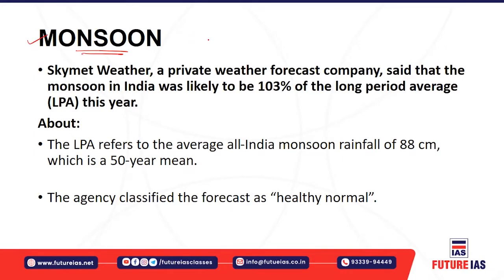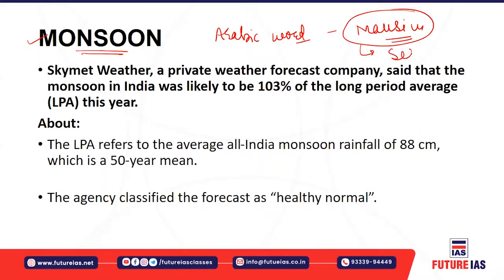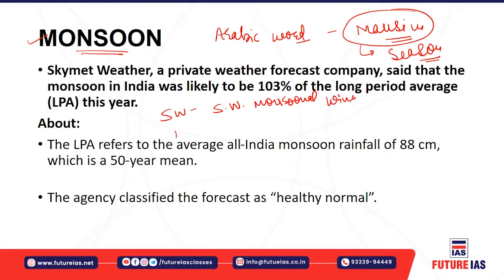As you know, the word monsoon basically came from an Arabic word called 'mausim', which means season. So in the monsoon you have the seasonal reversal of the winds. In the southwestern monsoonal time you have the southwest monsoonal wind, and during northeast monsoonal time you have the northeastern winds.